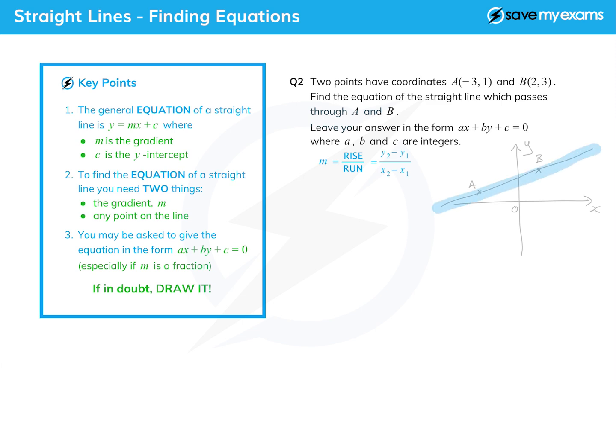The first thing I can see is that the gradient is positive, so if when I'm calculating the gradient I get a minus number, then I know I've done it wrong.